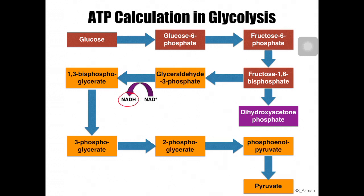In step 7, we also have phosphorylation where one phosphate group from 1,3-bisphosphoglycerate is transferred to ADP. Since ADP receives an additional phosphate, it becomes ATP — this is a step where ATP is being produced. In the last step of glycolysis, phosphorylation happens again where one phosphate group from phosphoenolpyruvate is added to ADP to produce one ATP molecule.